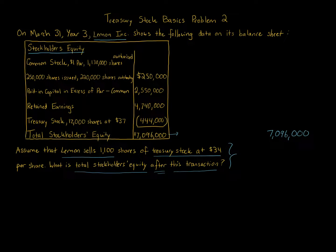When a corporation — in this case Lemon Inc — sells shares of treasury stock, that's the key word: sells. When it sells back shares of treasury stock, it's reissuing them. When a corporation buys treasury stock, it's buying them from the actual stockholders and taking them back, reducing shares outstanding. When a corporation sells treasury stock, it's putting those shares back out there so they're now considered outstanding.